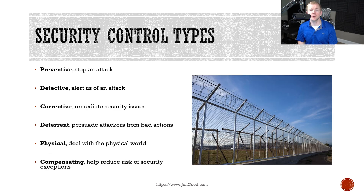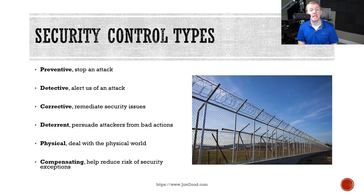In addition to control categories, we have specific control types based on what a control's objective is. We have preventative controls, which try to prevent something from happening — firewalls may try to prevent malicious activity. Detective controls identify an event that's already occurred. Intrusion detection systems are one of the better-known detective controls because they alert us on an attack, but they don't stop it.